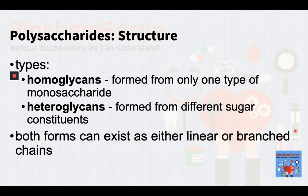Polysaccharides that are formed from only one type of monosaccharide are called homopolysaccharides, or homoglycans, while those formed from different sugar constituents are called heteropolysaccharides, also sometimes referred to as heteroglycans. Both forms can exist as either linear or branched chains.